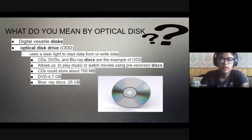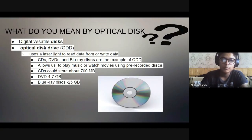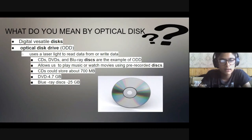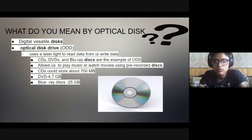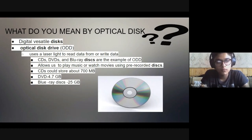An optical disk is also known as ODD. In computers, laser light is used to read or write data from optical disks. CDs, DVDs, and Blu-ray discs are examples of ODD. They allow us to play music or watch movies using pre-recorded discs. A CD can store about 700 MB, a DVD can store up to 4.7 GB, and a Blu-ray disc can store up to 25 GB - these values may vary.